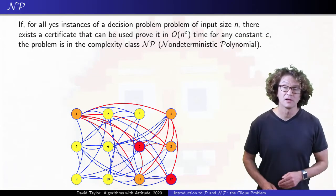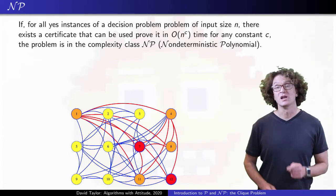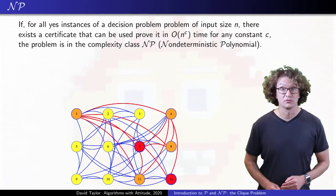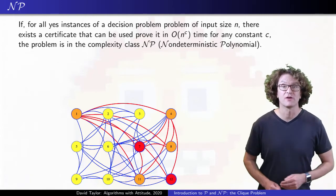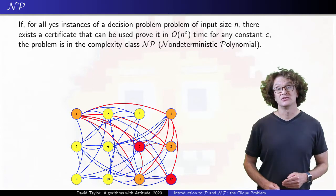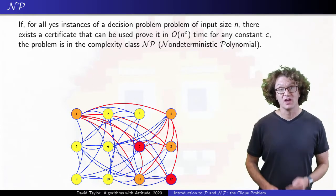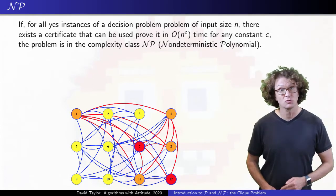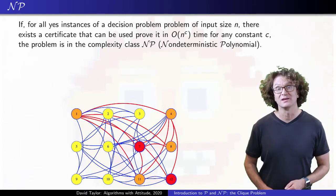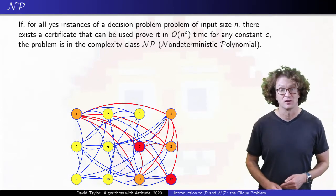This problem is in a complexity class called NP, for non-deterministic polynomial. That name comes from the original way the class was defined, but we will use a different definition here that defines the same class. A problem is in NP if it is a decision problem, and for yes instances, there is a certificate or proof that somebody can give you to help you verify that it is a yes instance in polynomial time.